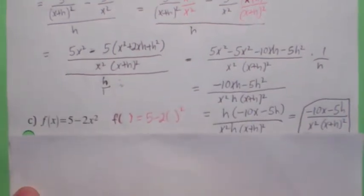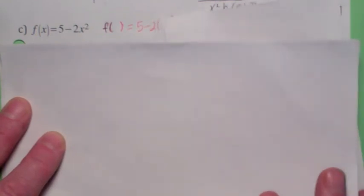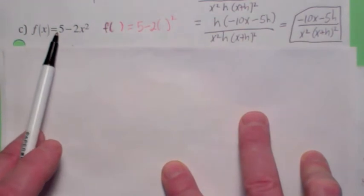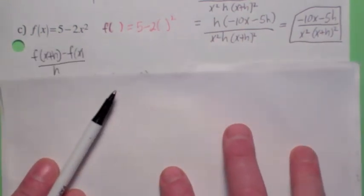All right, well, let me see. Why don't you try one? This one isn't too bad compared to what we just did, anyway. Why don't you try to find the difference quotient for this function right here? f(x) equals 5 minus 2x squared. Go ahead and hit the pause button.